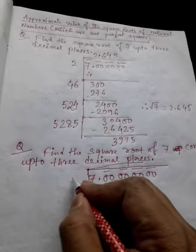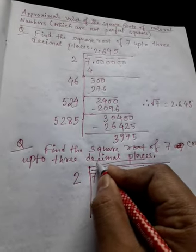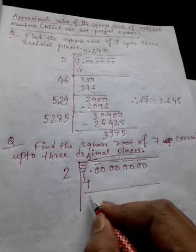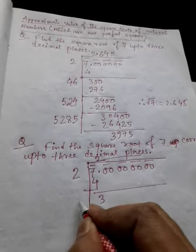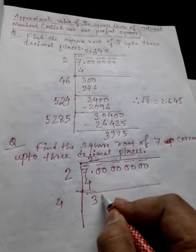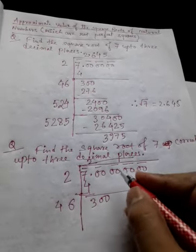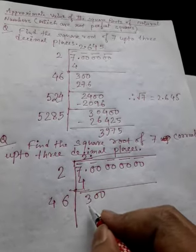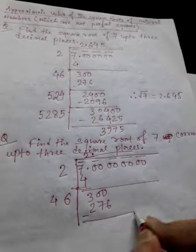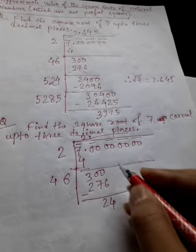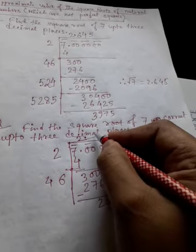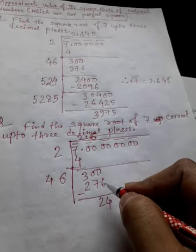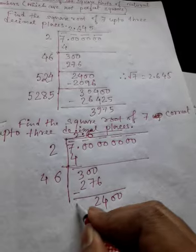Similarly, if we take 2 here, then two twos are 4, remainder is 3, and double of 2 is 4. Then bring down these two zeros. If we take 6 here, here is the point so we give the point here. So 46 into 6 is 276, remainder is 24. We take 6 in the quotient as well. Remainder is 24 and we bring the next pair of zeros.